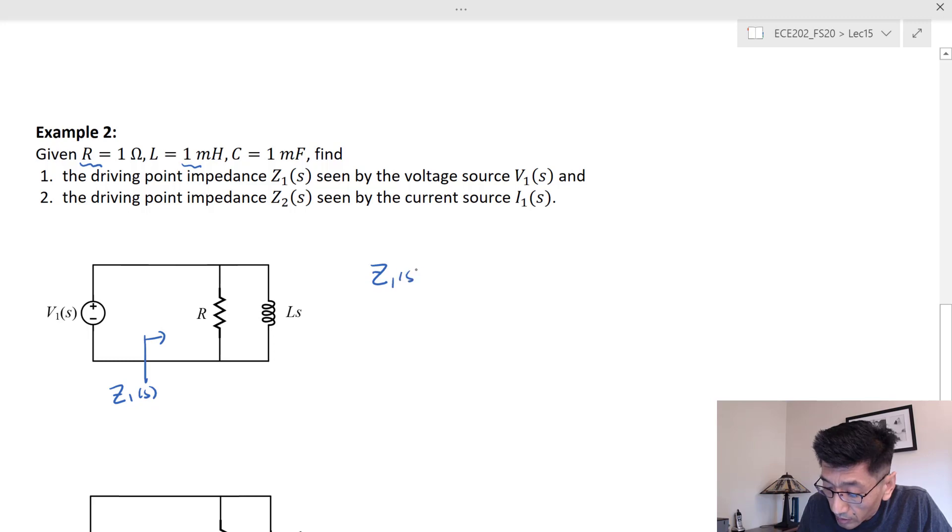Since R and Ls are in parallel, we can find it in two different ways. You can use the product over the sum: R times Ls over R plus Ls. In that case, if you substitute all the numbers in, you get 1 times 0.001s over...